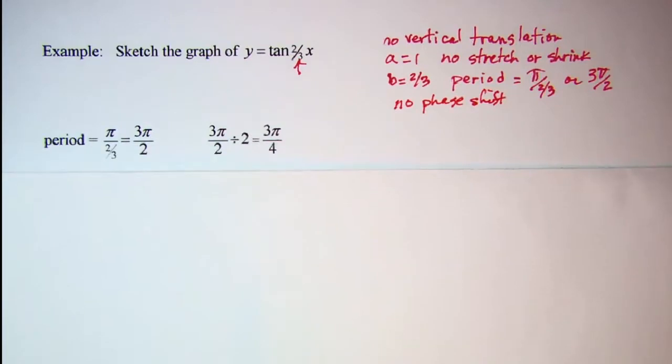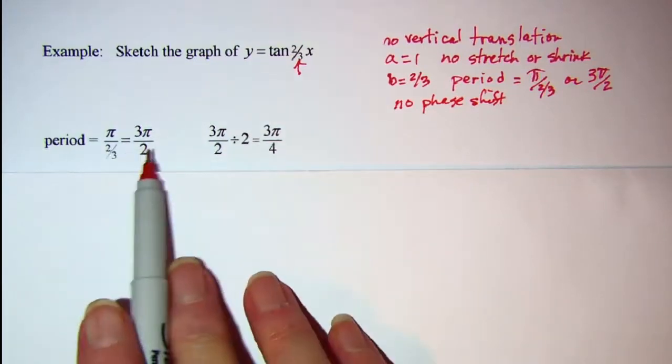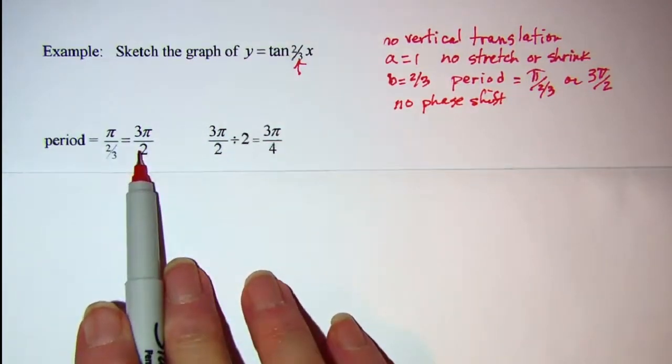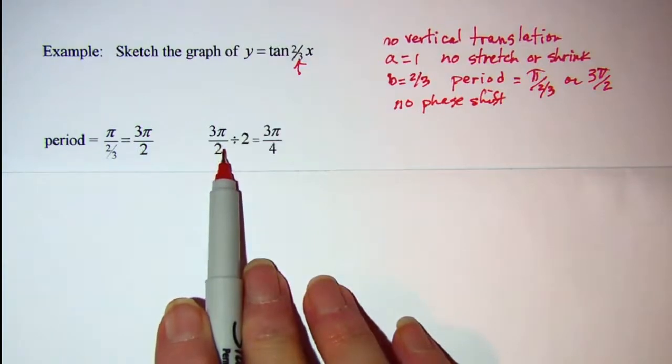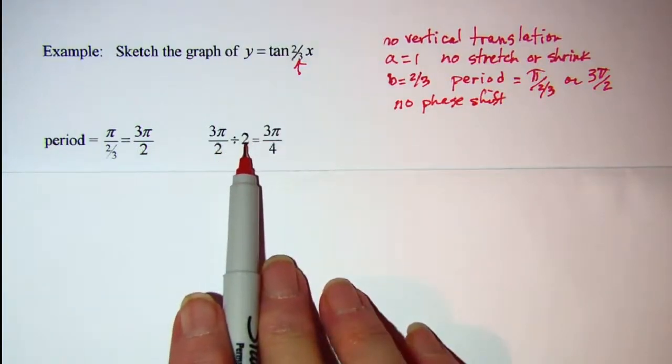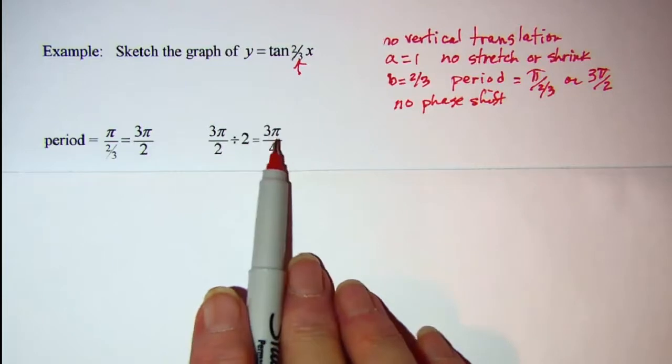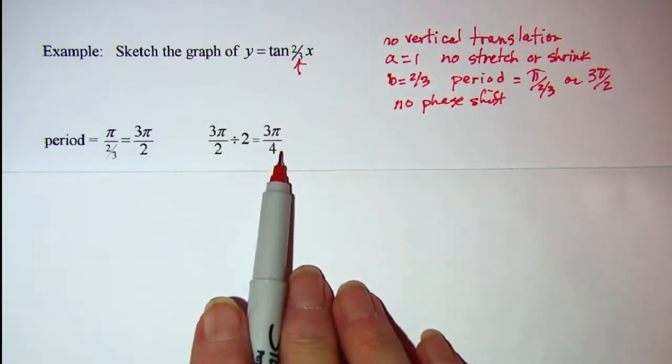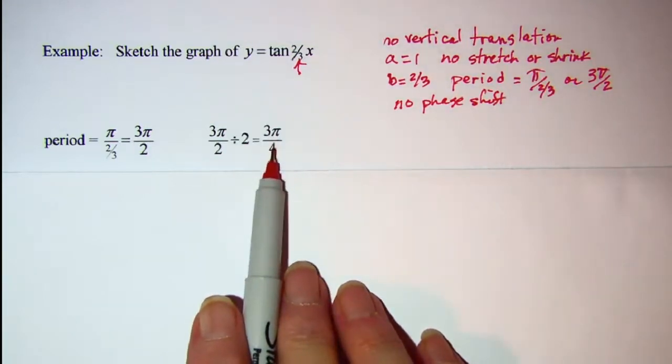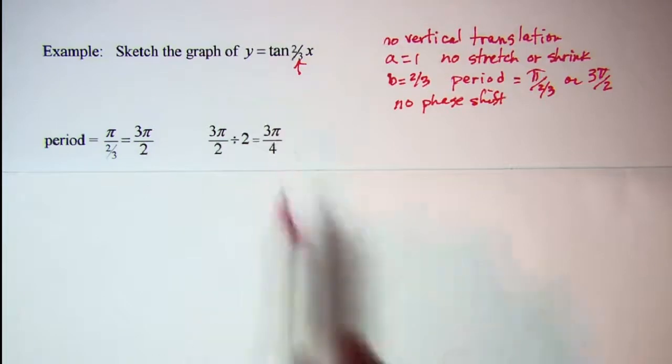So once we have our period we said it was three π over two. Remember for the tangent function we have to divide that by two to find out how much is on the right of the x value and how much is on the left. So we get three π over four.